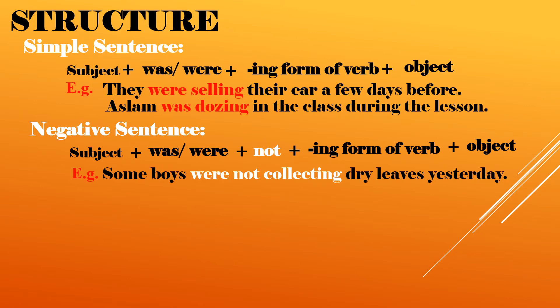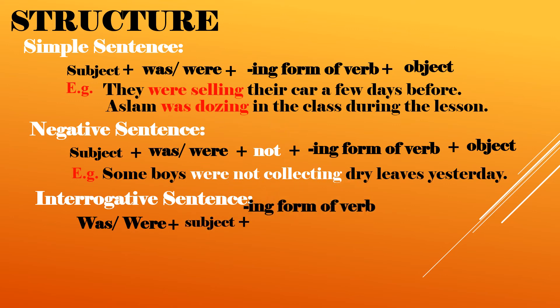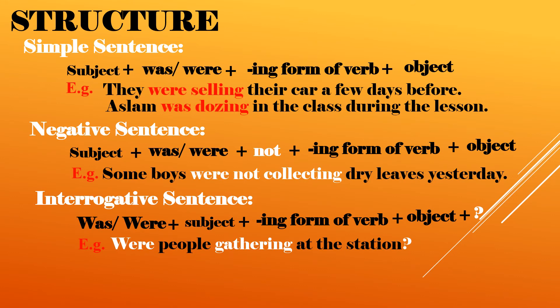Similarly, interrogative sentences. In interrogative sentences we bring helping verb was or were in the beginning, then we place subject, then the same -ing form of a verb, then object, and in the end we put a question mark. Here is an example: were people gathering at the station? We have placed were in the beginning, then after verb follows the subject, then -ing form of a verb, then in the end we have put a question mark. Similarly, were you calling me when I emailed you this afternoon?